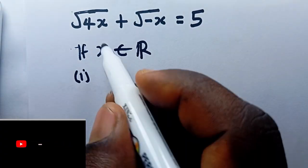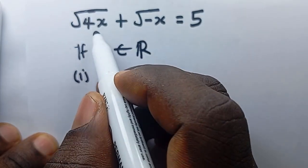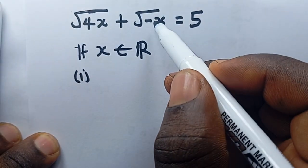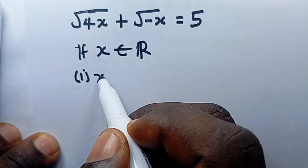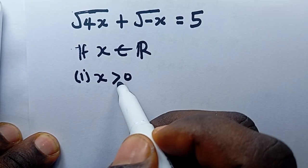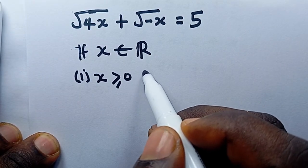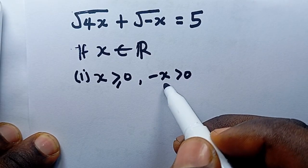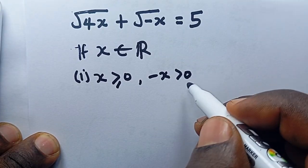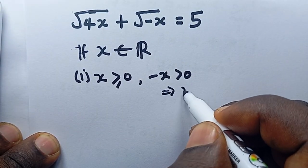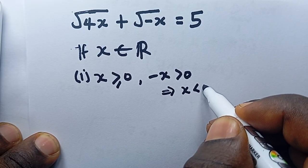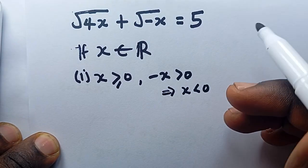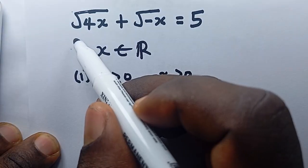There are some conditions x is going to satisfy. First, 4x must be positive, so x must be positive. But for root(-x) to also be positive, we need -x to be positive, which implies x is negative. So x must be both positive and negative.